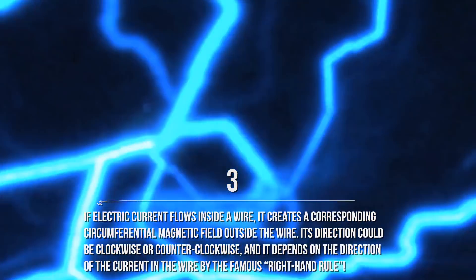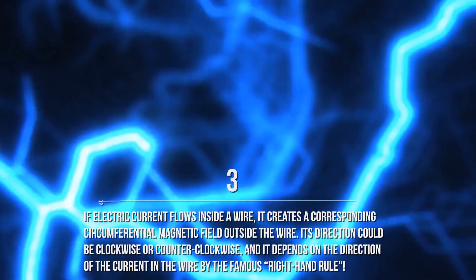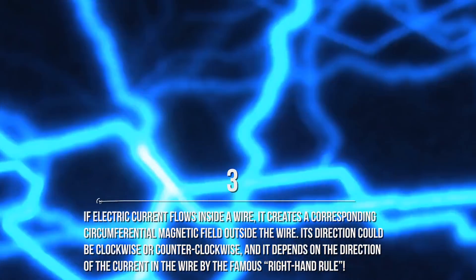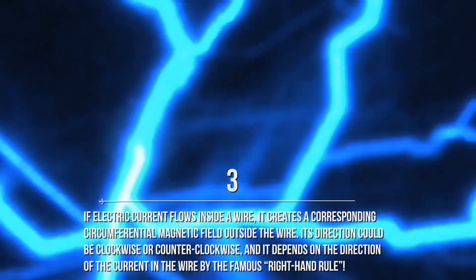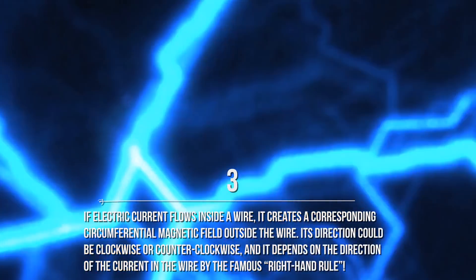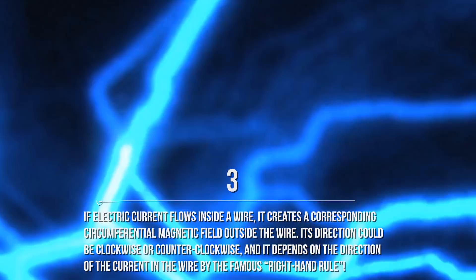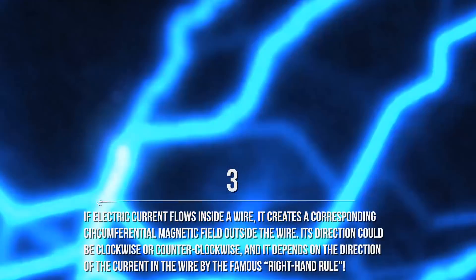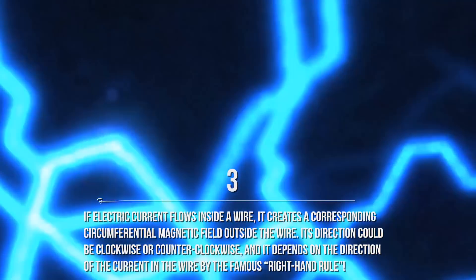3. If electric current flows inside a wire, it creates a corresponding circumferential magnetic field outside the wire. Its direction could be clockwise or counterclockwise, and it depends on the direction of the current in the wire, by the famous right-hand rule.